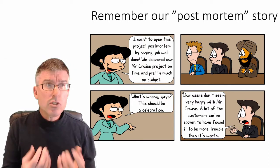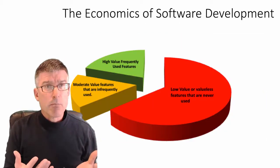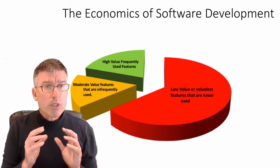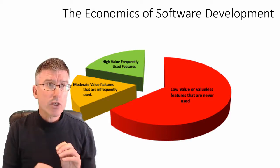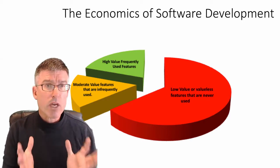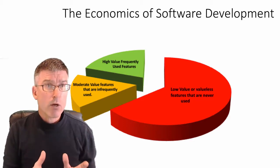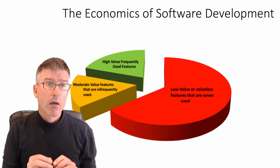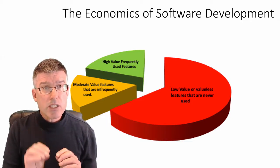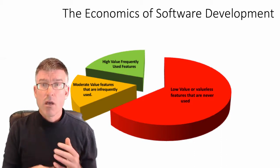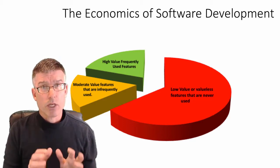And this is not a rare occurrence. In fact, if you take the data produced by the Standish Group, it would suggest that only some 15% of the features and systems that we create are actually found valuable and useful by our stakeholders and users. That's that green. On the other hand, some 65% of features and systems are either low value or useless from the point of view of our stakeholders and users.